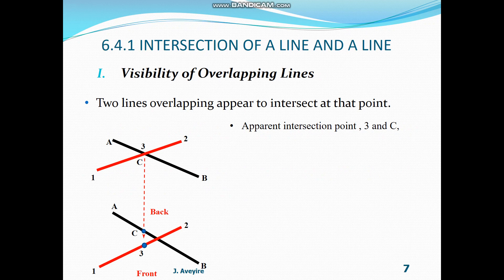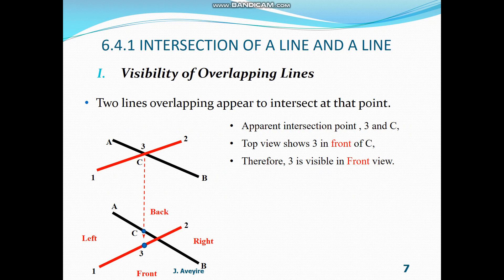Now, let us note the orientation of the top view: front, back, left, and right. When we look at points C and 3, from the top view we can see that point 3 is in front of point C. Therefore, point 3 is going to be visible in the front view, whereas point C will not be visible.